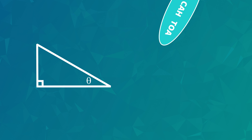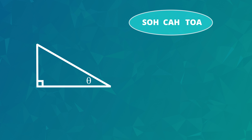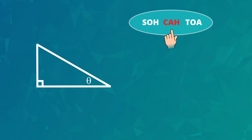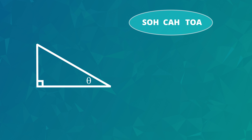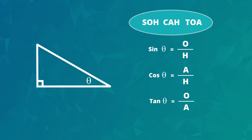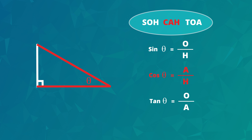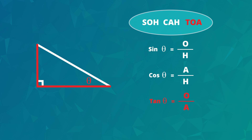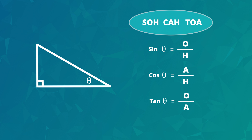Here's a quick trick to remember these rules: SOH CAH TOA — S-O-H-C-A-H-T-O-A. It's not a word; it's a quick way to remember the three rules. The sine of the angle is the opposite side divided by the hypotenuse, the cosine of the angle is the adjacent side divided by the hypotenuse, and the tangent of the angle is the opposite side divided by the adjacent side. SOH CAH TOA.